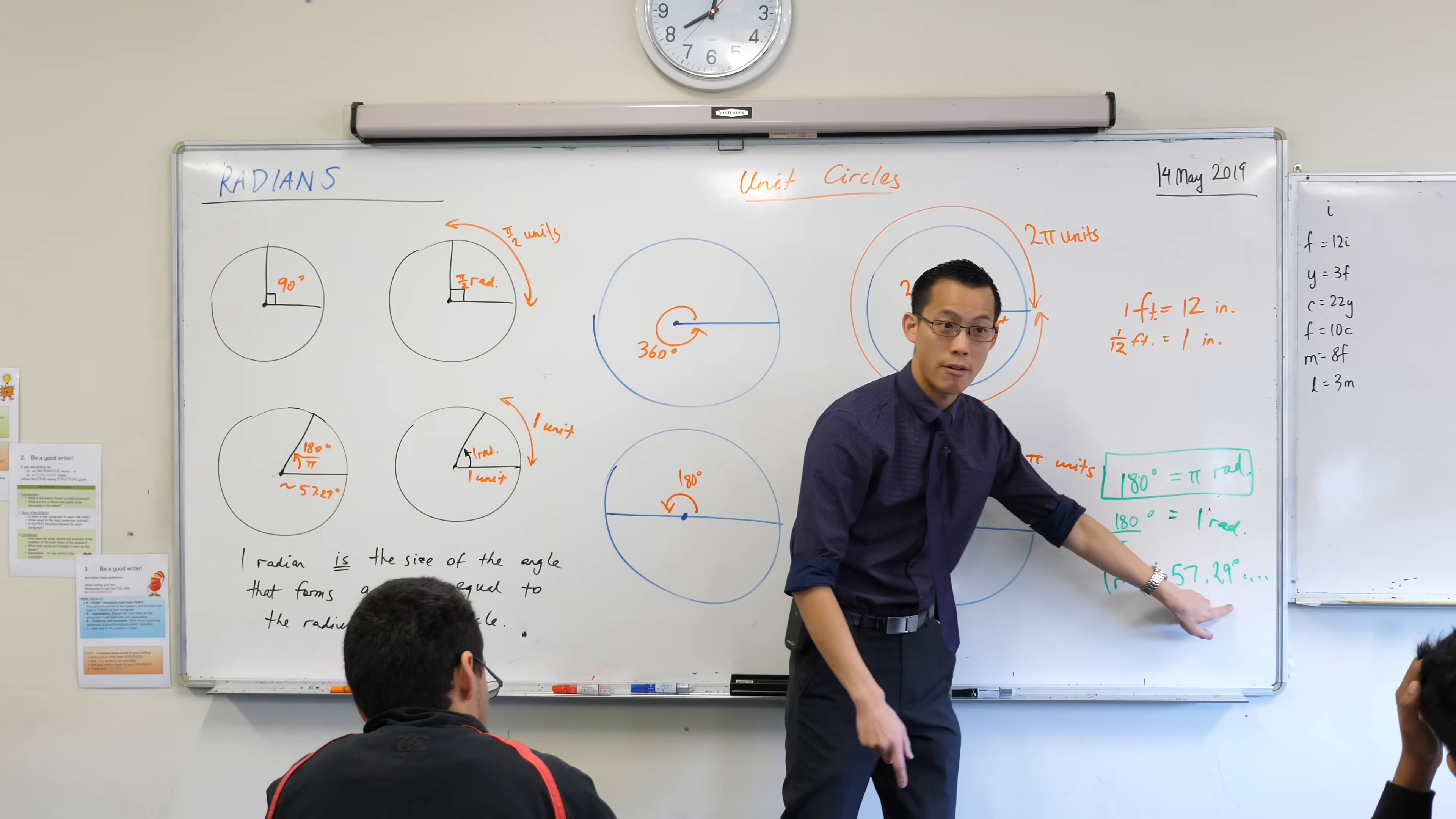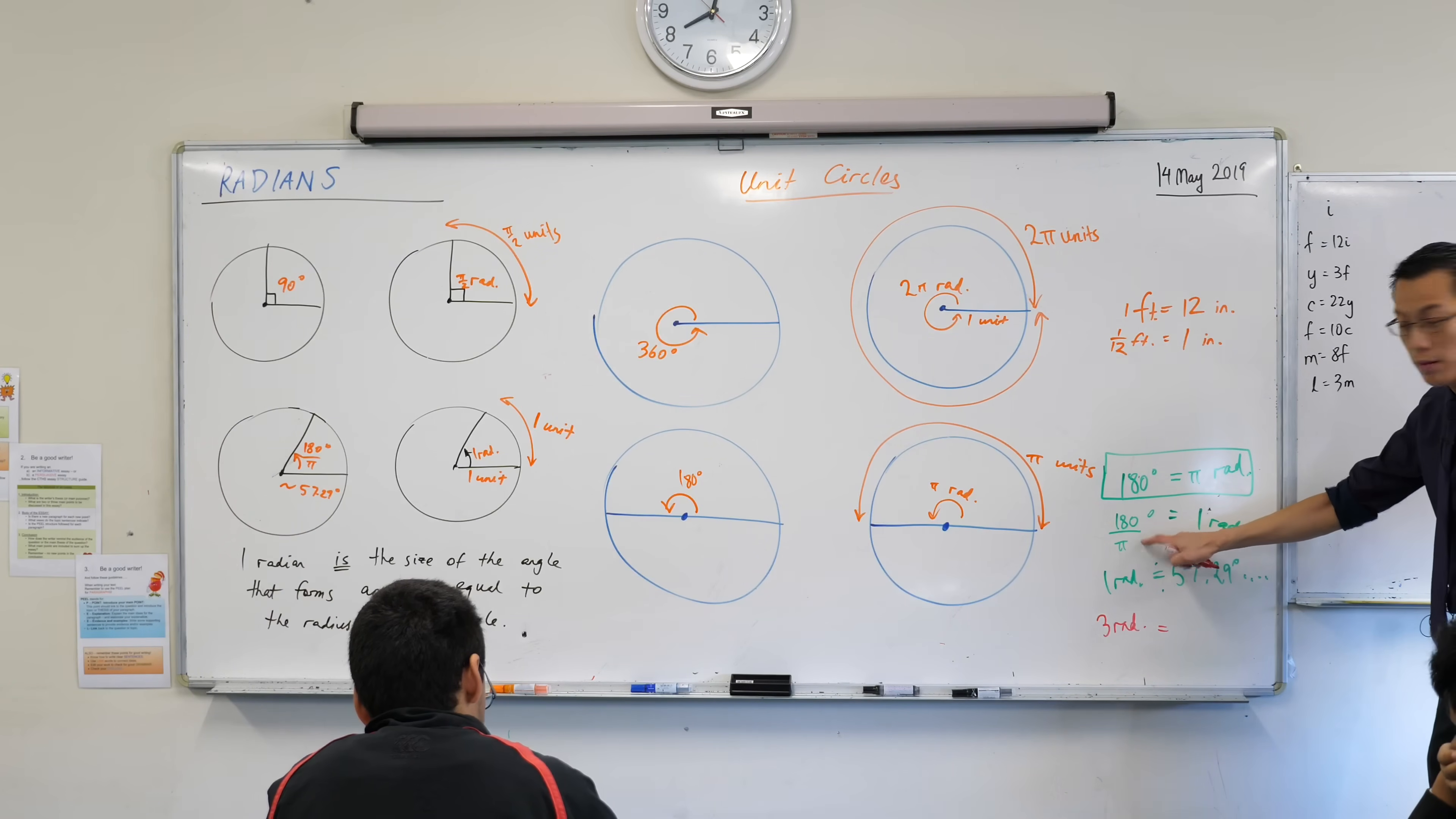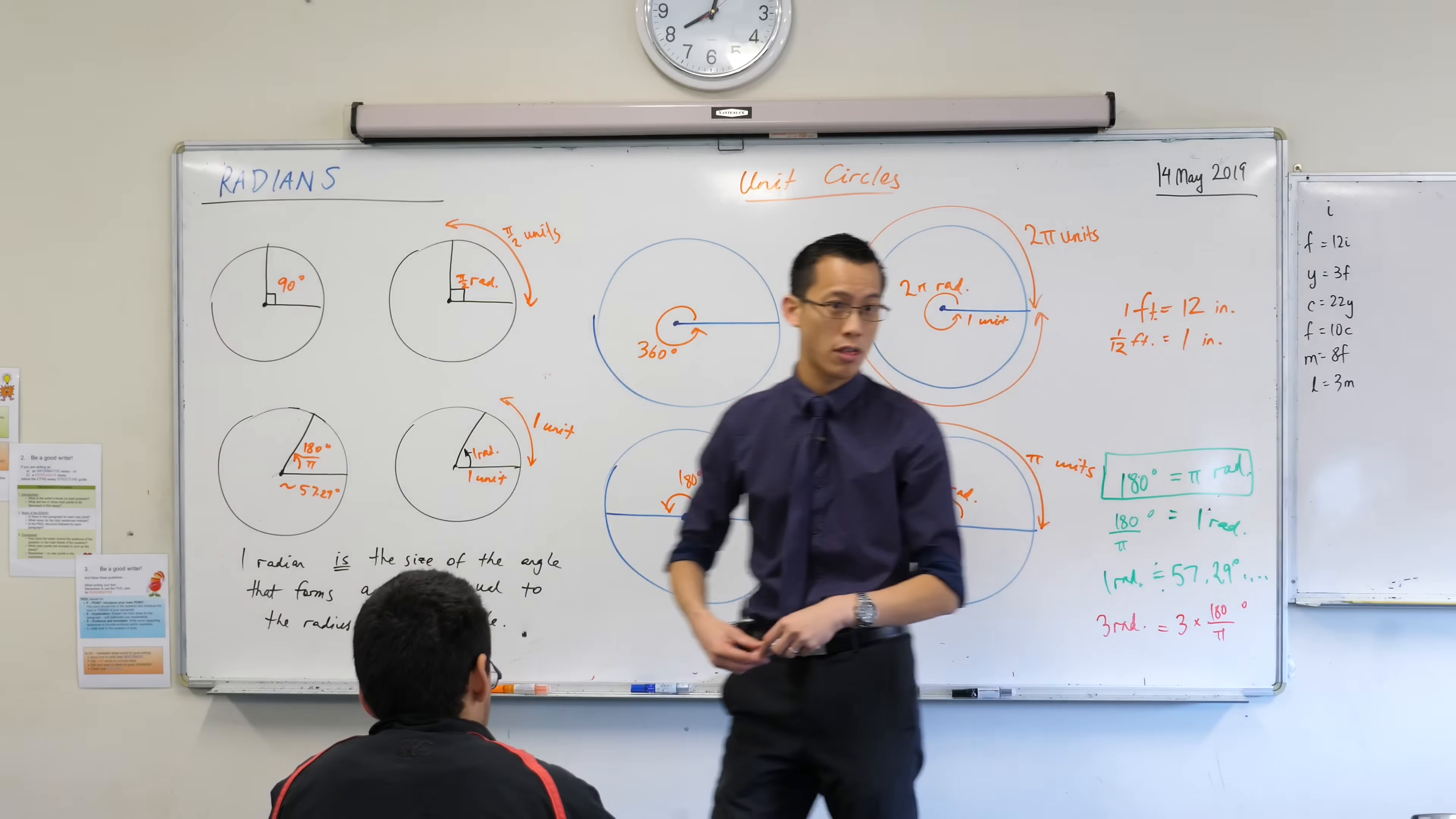For example, if this is what one radian is, how would I work out the size of, say, three radians? What I would do is I'd say, okay, if that's one radian, I just multiply that by three, and that'll give me the number of degrees. Three multiplied by 180 on π, that'll be the number of degrees. Can you just punch that into your calculator for me? Three, and then multiply it by 180 on π. What should you get? Three radians.